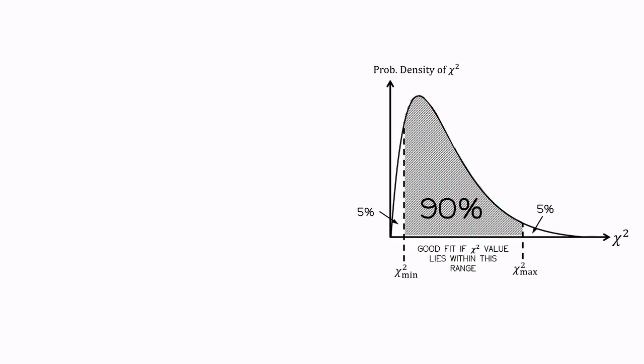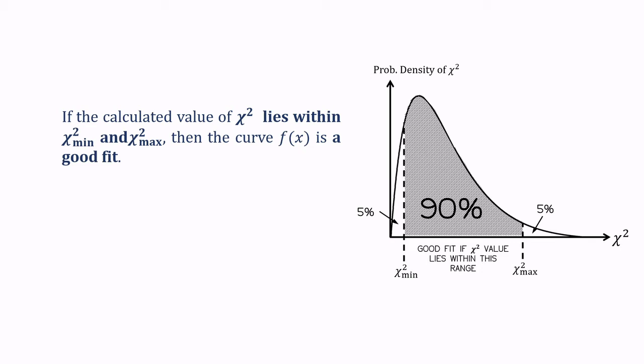Therefore, if the calculated chi squared lies within the chi squared min and the chi squared max, then the curve is a good fit.